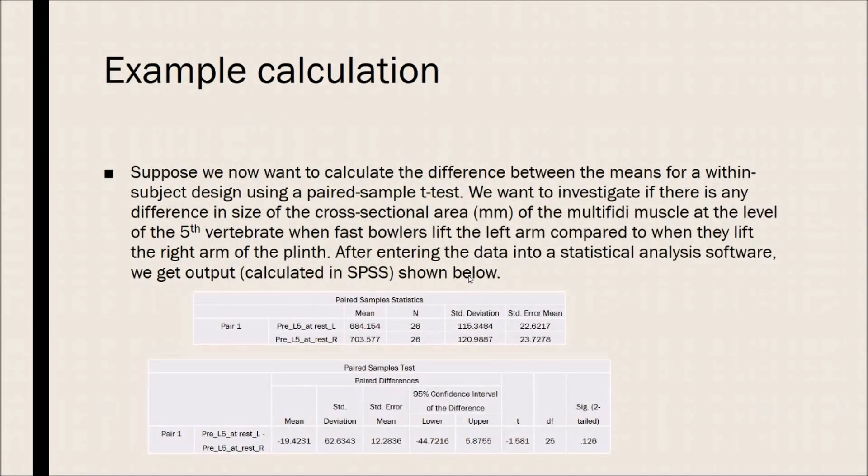So, an example calculation. Suppose we now want to calculate the difference between the means for a within-subject design using a paired sample t-test. We want to investigate if there is any difference in the size of the cross-sectional area in millimeters of the multifidus muscle at the level of the fifth vertebrae when fast bowlers lift the left arm compared to when they lift the right arm of the plinth. After entering the data into a statistical analysis software, we get the output. This was calculated in SPSS and is shown below.